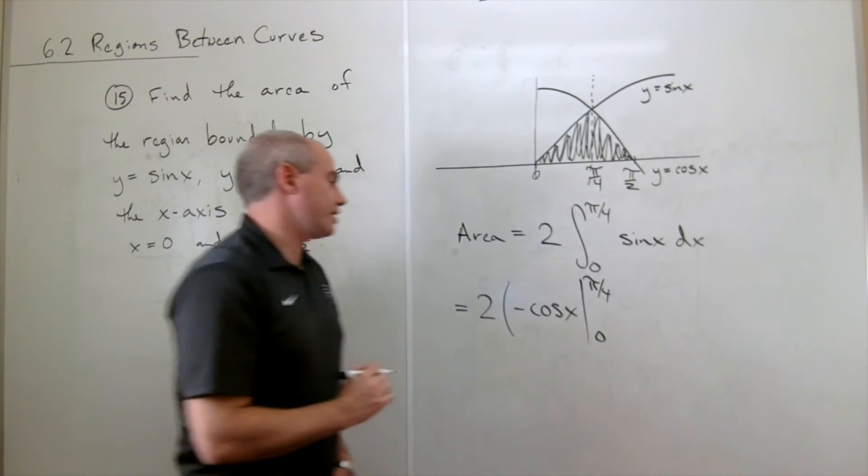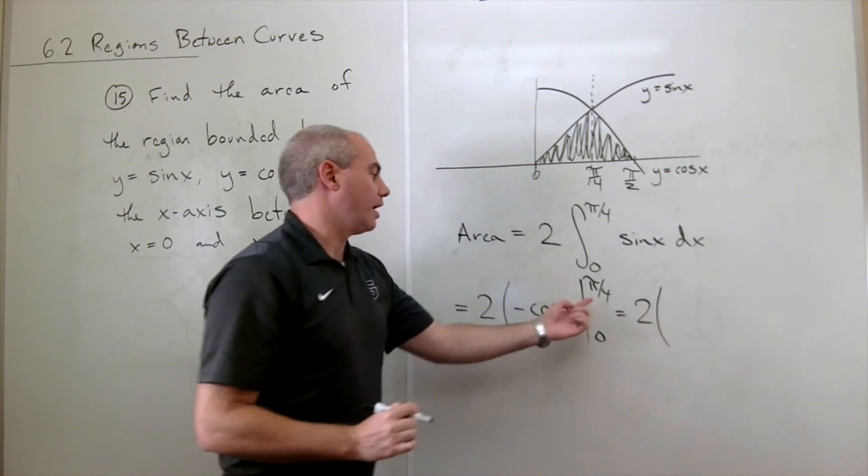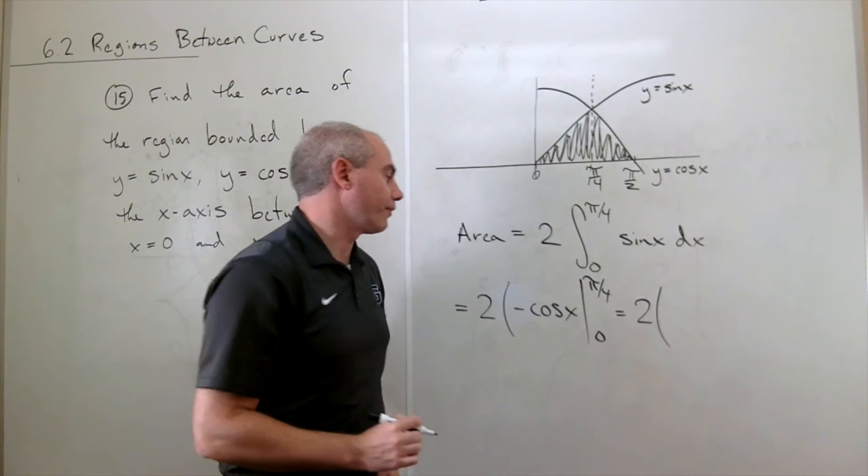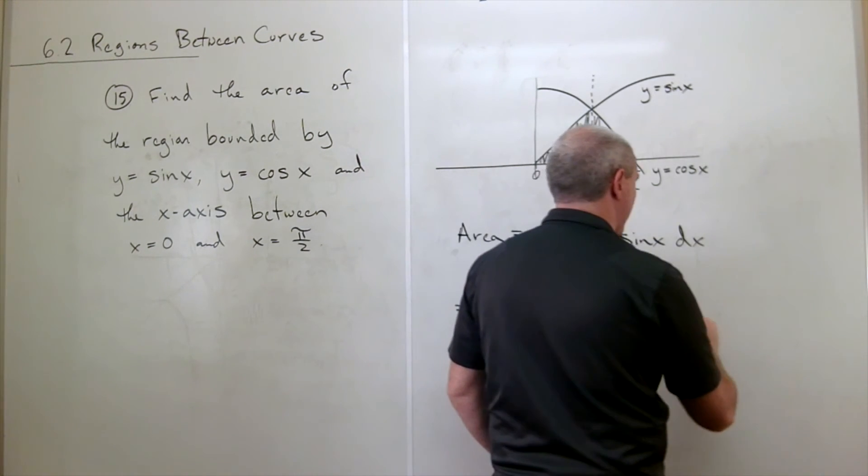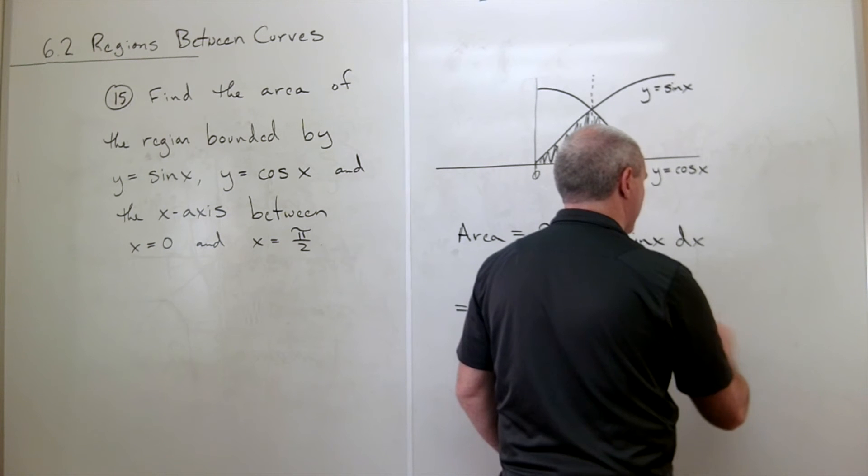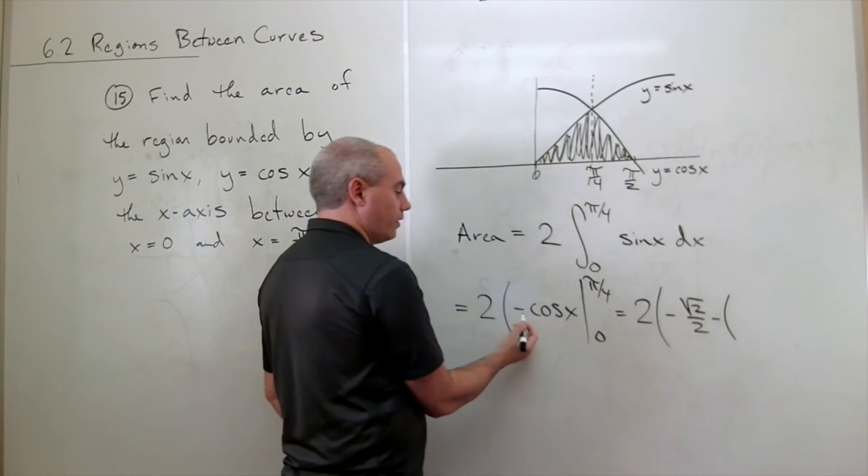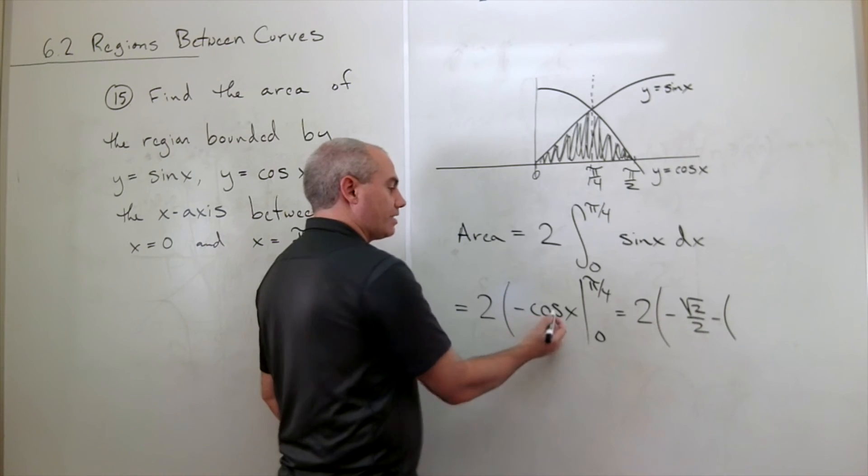Now we can plug things in. We still have this 2 on the outside. If I plug in pi over 4, I get negative cosine of pi over 4. Cosine of pi over 4 is root 2 over 2, so I get minus root 2 over 2, minus, then we plug in 0, and I get minus cosine of 0. Well, cosine of 0 is 1, so I get minus 1.